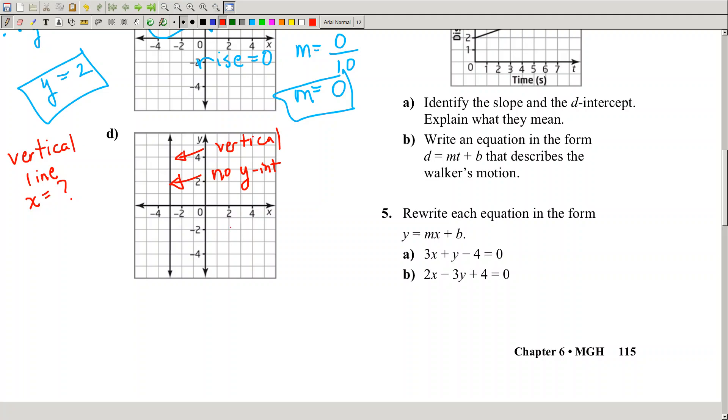This line has no y-intercept. It does not cross the y-axis, it's parallel to the y-axis. It goes through the x-axis but not the y-axis. There's no y-intercept and no slope.